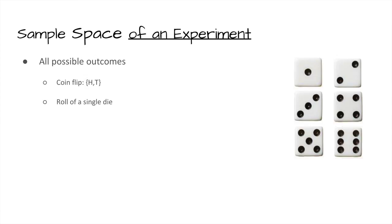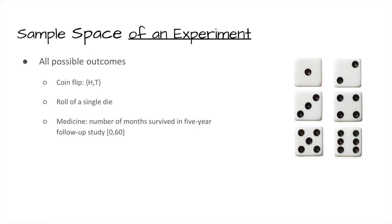Very briefly, we need a sample space of our experiment — simply all the possible outcomes. If I flip a coin once, the sample space is just heads or tails. If I roll a single die, there are six possible outcomes. In medicine, I may be concerned with how many months somebody survives in a five-year follow-up study, so the number of answers is 61: zero, one, two, up to 60 months.